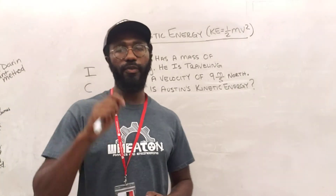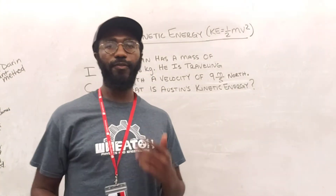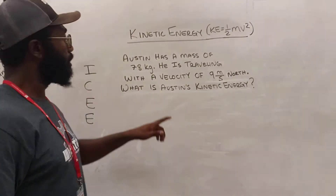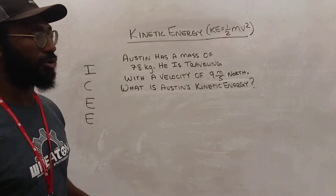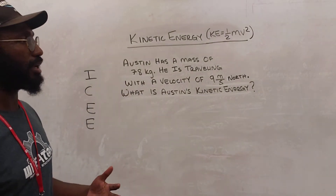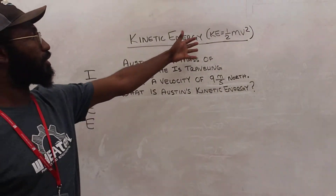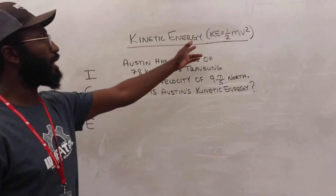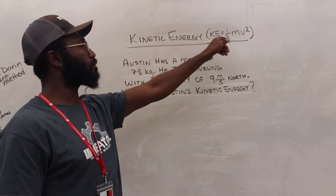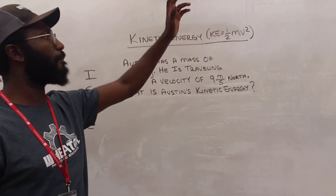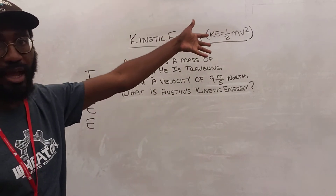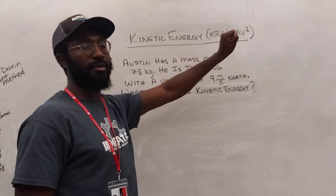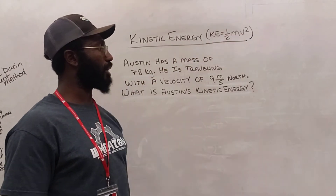Hey, how's it going? It's Mr. Farrell with another physics tutorial, this time on kinetic energy. We're going to focus on kinetic energy using this equation: kinetic energy, KE, equals one-half mass of an object times the velocity of the object squared.